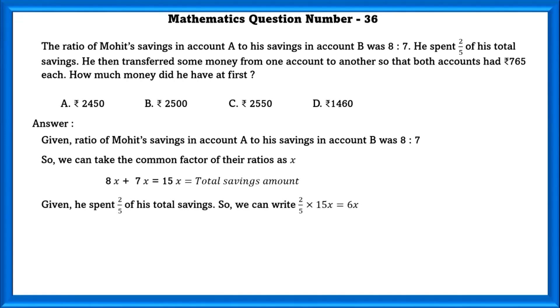Given, he spent 2 by 5 of his total savings. So we can write this as 2 by 5 into 15X which is equal to 6X. Remaining amount is equal to 15X minus 6X which is equal to 9X.